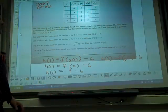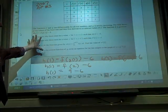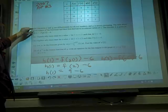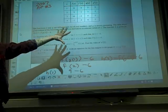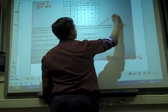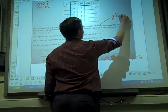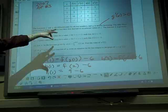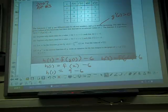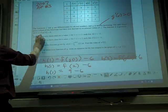Alright, 2007 AP problem, free response, number three, loud calculators. It gives you a table and it says the functions f and g are differentiable for all real numbers. g is strictly increasing, so g prime of x is always greater than zero. The table above gives values for the functions and their first derivatives of selected values. The function h of x is given by that.